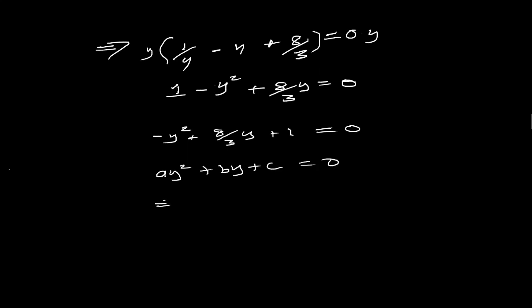We can solve it using the quadratic formula. In our case, a is negative one, b is positive eight over three, and c is positive one.